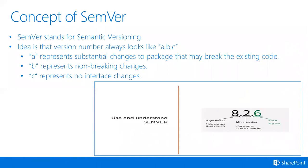If you are issuing only a patch — in other words, there is no change to the API — then the last digit changes. But if you are making changes to the API by adding new methods that do not break the API, new features where existing code is not expected to break, then you update the middle number, the minor version. But if you are shipping a major version that might break the API or break the existing code, then you update the major version, the leftmost number.